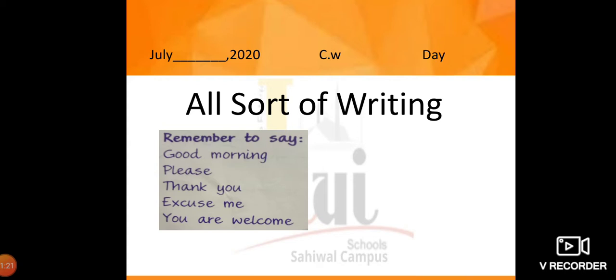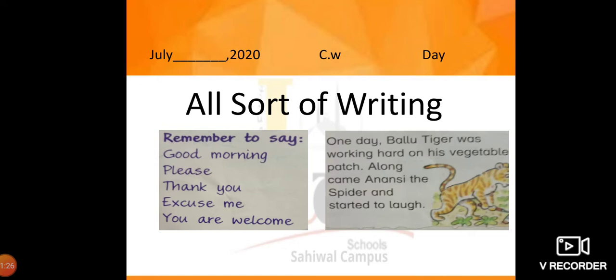The next one reads: 'One day Baloo the tiger was working hard on his vegetable patch. Along came Anansi the spider and started to laugh.' This is part of a story — it starts with 'one day,' so it is taken from a storybook. The first piece might be written on the classroom wall, and the second is taken from a storybook.